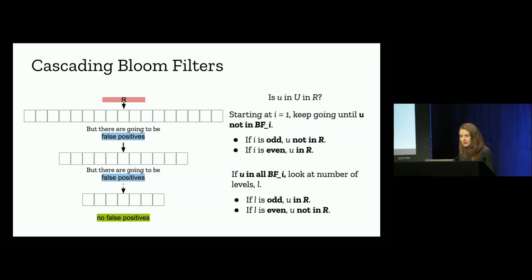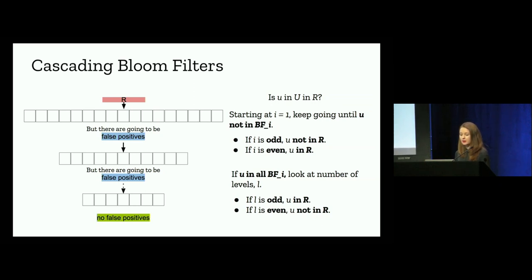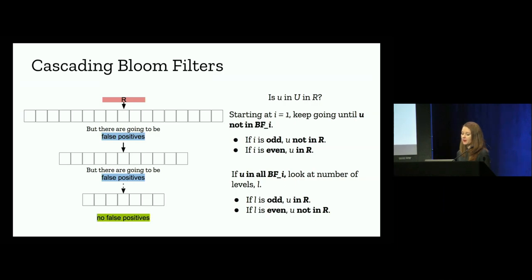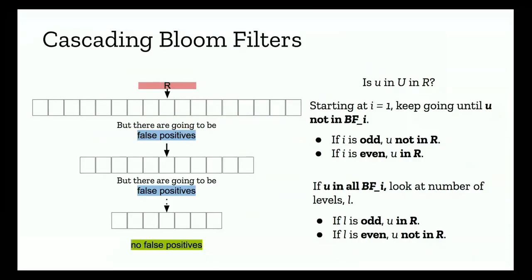There is a simple method for checking whether a certificate is revoked: given certificate U, start with I=1 and keep going until U is not in bloom filter I. If I is odd, then it's not in R — not revoked. If I is even, then it is in R. If U is in all bloom filters, look at the number of levels: if the number of levels is odd, it is in R; if even, it's not in R.